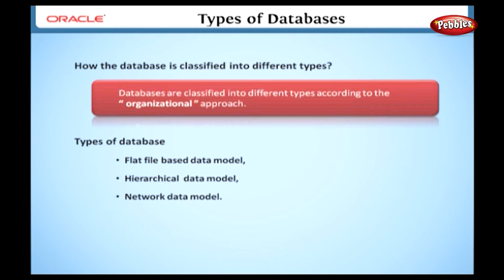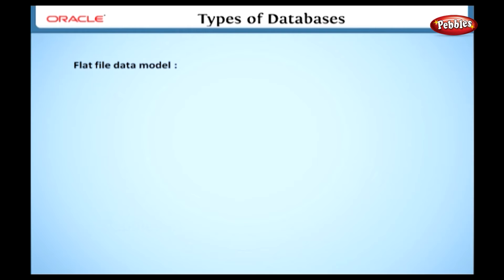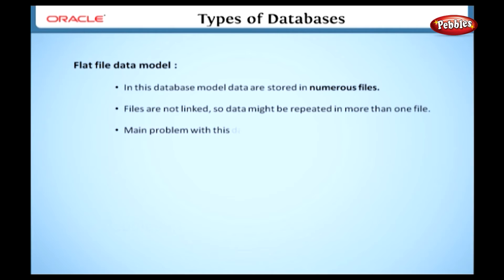First, we will learn about the flat file database model. In this model, data is stored in numerous files similar to office files. However, the files are not linked, so data might be repeated in more than one file. The main problem with this database model is redundancy. Due to this problem, the model is not widely used.